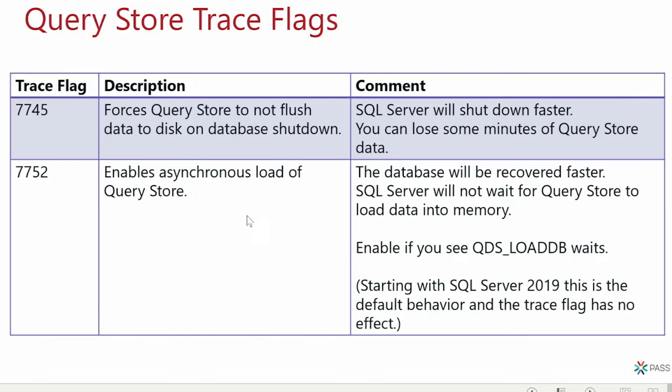There are a few relevant trace flags. Trace flag 7752 is worth considering if you see QDS_LOADDB waits. It's not needed in SQL Server 2019, and can only be added in 2016 and 2017. It's only needed if you have a very large Query Store, because when a database starts up it loads Query Store data into memory, which can be slow if the store is large.